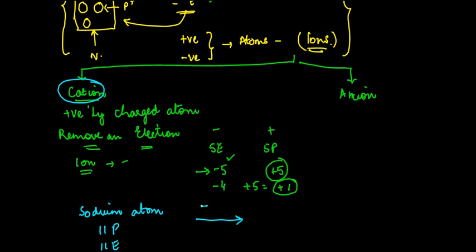If I undergo a process where I remove one electron, then what will happen is I will have 11 protons but 10 electrons. This is plus, this is minus. If I do an addition, what do I get? I will get plus one.